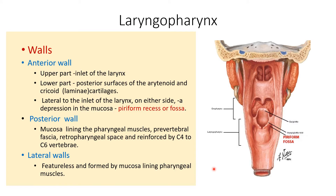Regarding the walls of the laryngopharynx: the anterior wall in its upper part is the inlet of the larynx, and in the lower part it is the posterior surfaces of the arytenoid and cricoid cartilage, which consists of the lamina of the cricoid cartilage lateral to the inlet. On either side of the laryngopharynx there is a depression in the mucosa known as the piriform fossa, which you can see in this picture related to the larynx.